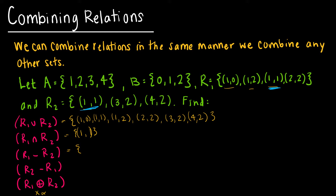R1 minus R2 says let's start with these four, take away anything that is in R2. That leaves me with (1,0), (1,2) — I don't have (1,1) because subtracting R2 took it away — and (2,2). Same goes for R2 minus R1: I have all elements of R2 except (1,1), which would be taken away when I subtract R1. So that leaves just (3,2) and (4,2).